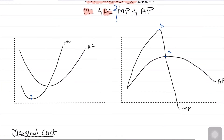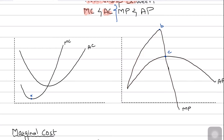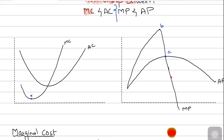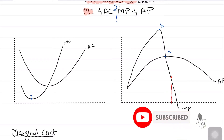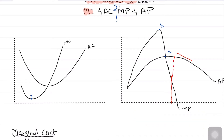Moving forward, let's discuss the shapes of marginal product and average product. Your marginal product initially goes up, and then after diminishing returns it goes down. Your average product is also initially increasing and then decreasing. The reason the average product first rises then falls is that when marginal product becomes less than average product, it pulls the average down. Marginal product will also cut the average product at the average product's highest point.